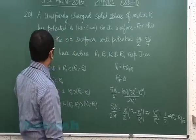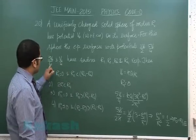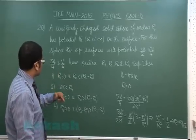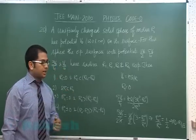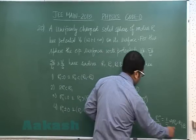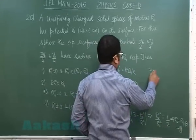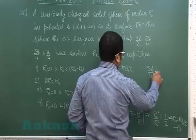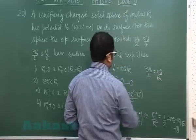Now the third case, 3V naught by 4 and V naught by 4, these are the potentials having less than V naught, so therefore these points must be outside the sphere. For simplicity let me call this equation 1, that would be equation 2.